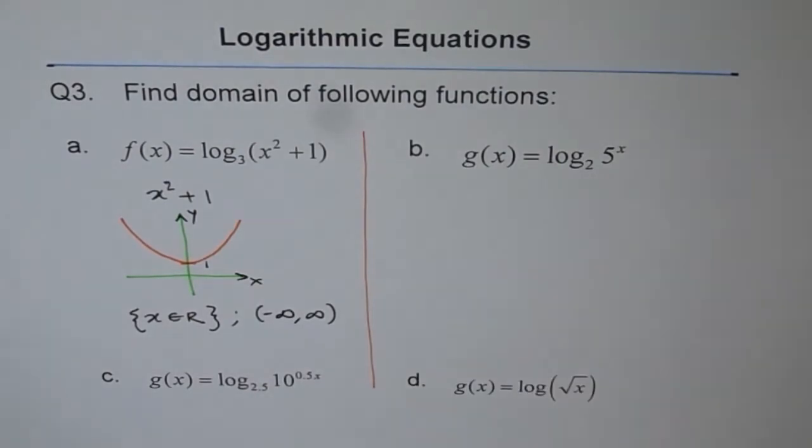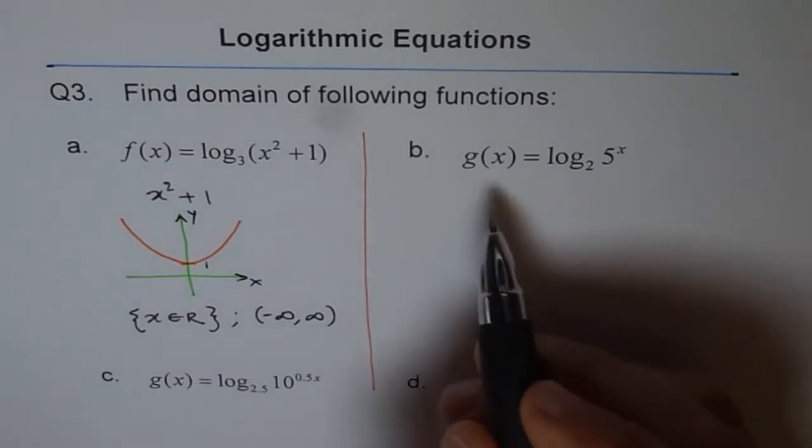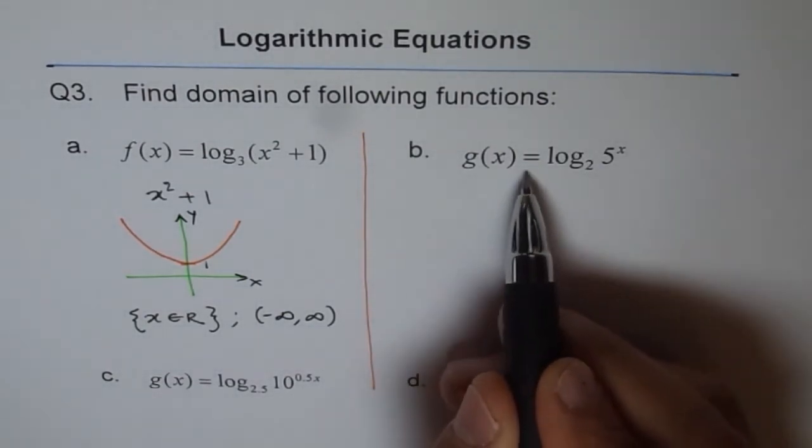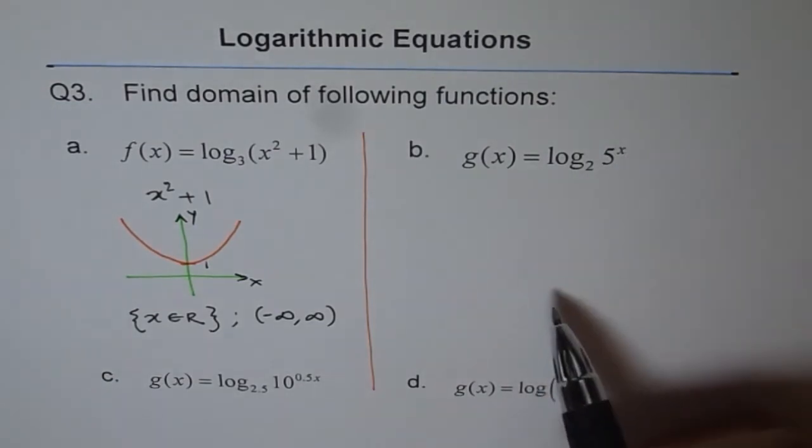Now let's do part b. Now part b here is also kind of very typical example. Now here we have g(x) equals log₂ with argument of 5ˣ.